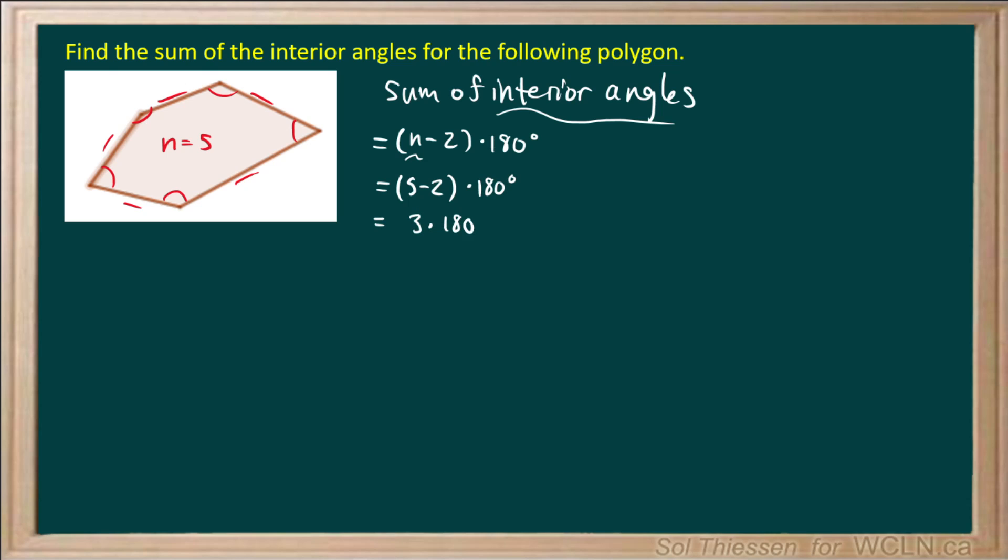times 180 degrees, which is 540 degrees. So if we were to sum all of those red highlighted angles, we would get 540 degrees.